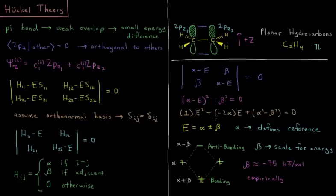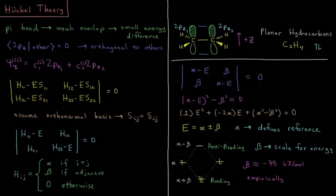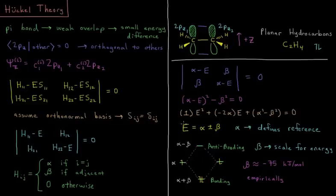If I put that into the quadratic formula, minus B plus or minus square root of B squared minus 4AC over 2A, where this is A, this is B, and this is C. If I plug this into the quadratic formula, I will get that E equals alpha plus or minus beta.